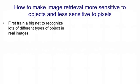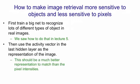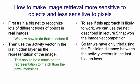So obviously we'd like image retrieval to be more sensitive to the content of the image — the kinds of objects and their relationships — and less sensitive to pixel intensities. We can do that by first training a big net to recognize lots of different kinds of objects in real images, as we saw in Lecture 5. Then we take the activity vector in the last hidden layer of the big net and use that as a representation of the image. This should be much better than pixel intensities at capturing information about the kinds of objects in the image. We could then take those activity vectors and build an autoencoder on top to get them down to binary codes.